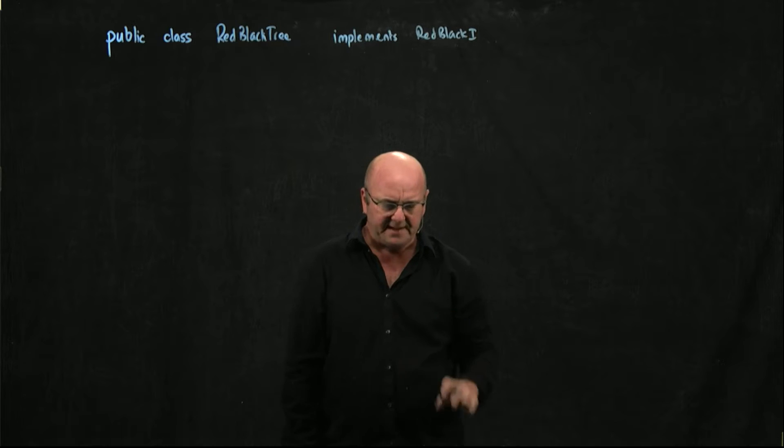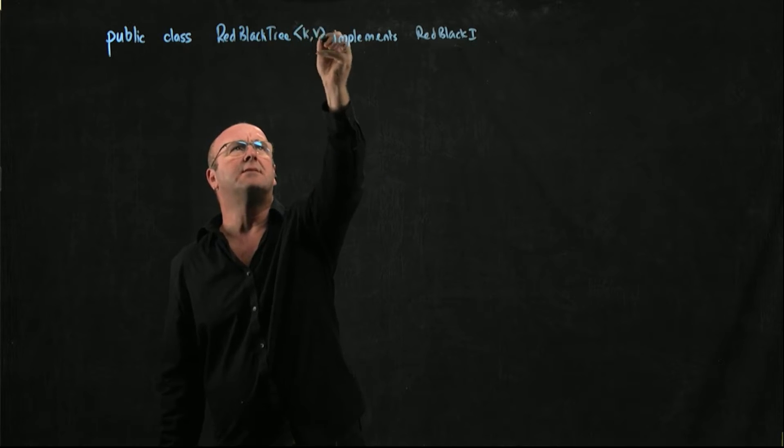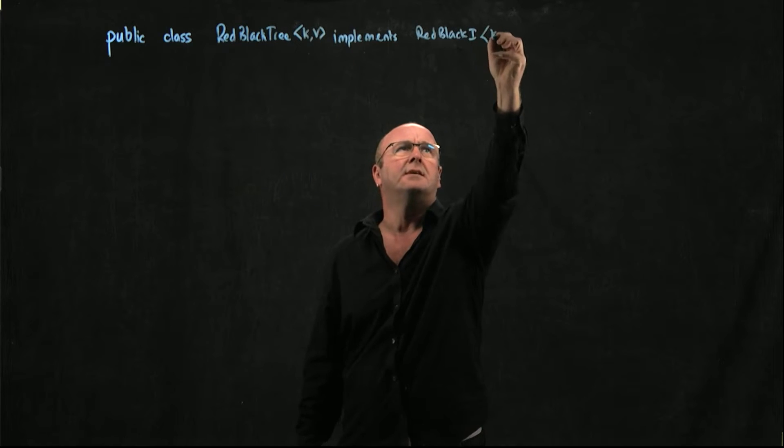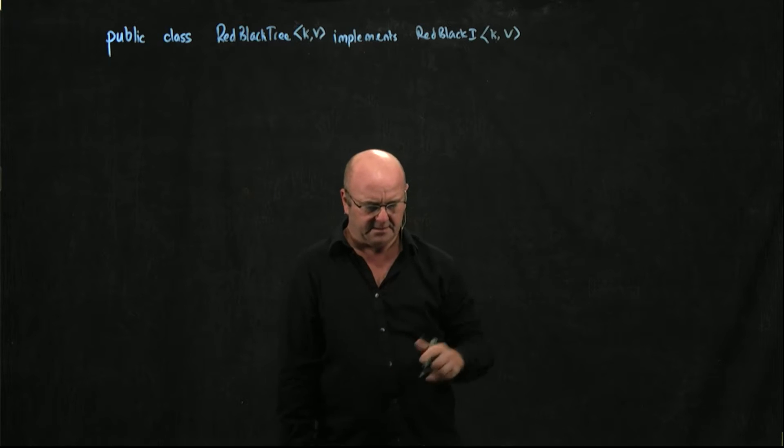Both the interface and the red-black tree are going to take keys and values. So we're going to have K,V and K,V - K for key, V for value, as we'll see.